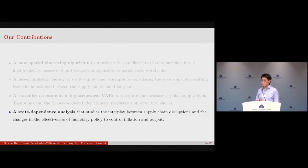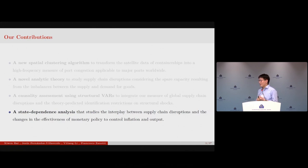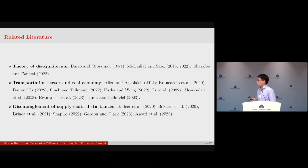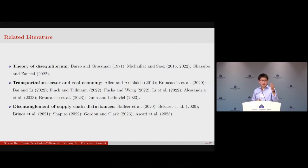In the third part, we integrate measurement and theory into structural VARs for causal assessment, comparing our measure's results with those using the GSCPI — and they are quite different. The fourth part is a state dependence analysis studying the interplay between supply chain disruptions and the effectiveness of monetary policy in controlling inflation and output. We predict the possibility of a soft landing for the U.S. economy, which is somewhat consistent with the morning's presentations.